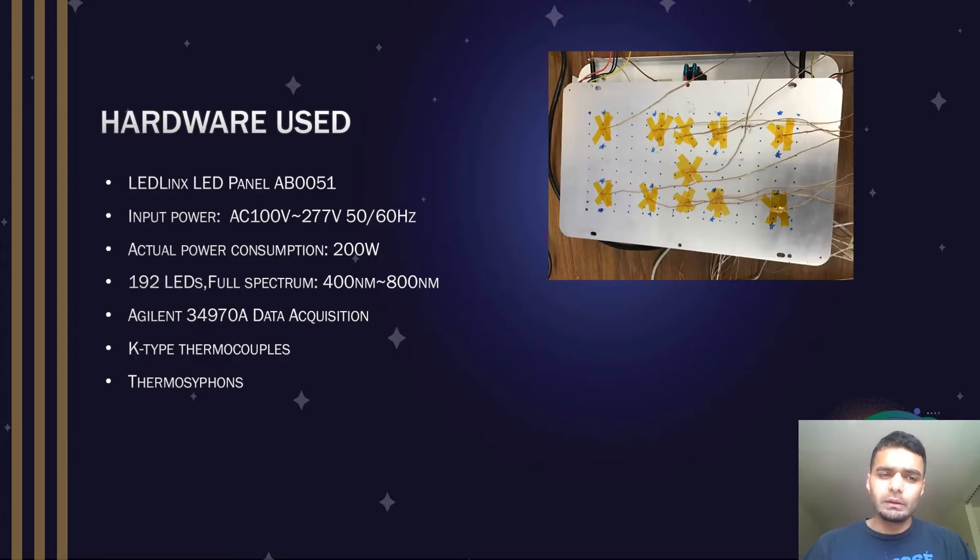The hardware that was used for this project was a Lead Links LED panel with 100 volts of AC input power. The total power consumption was 200 watts, which was also later used as our total heat flow to the back panel for ANSYS simulations. The panel had a total of 192 LEDs with wavelengths from 400 to 800 nanometers.